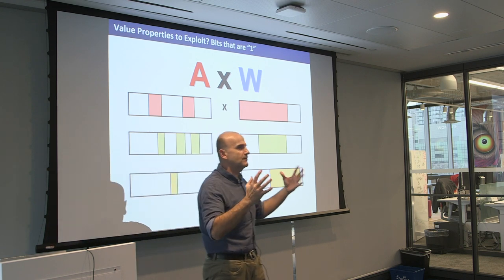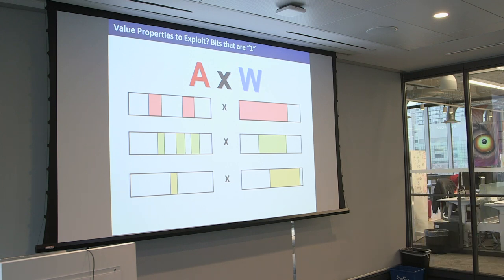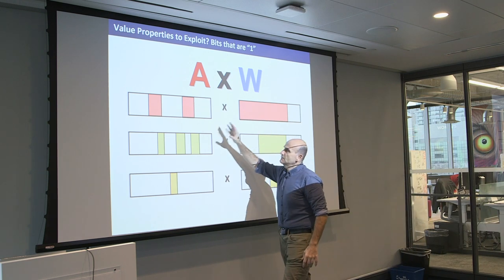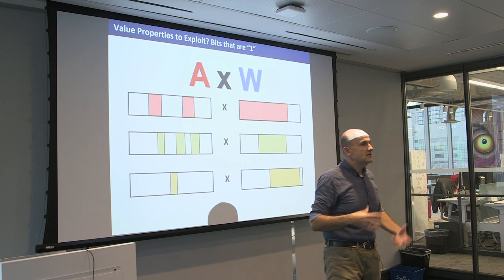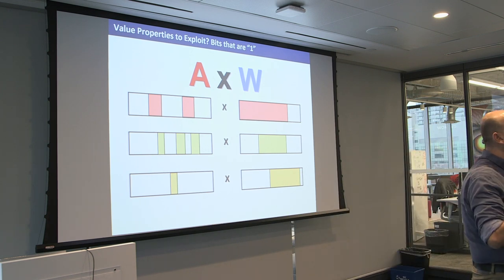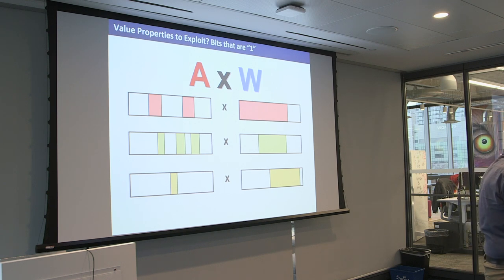The next idea: go back to primary school multiplication. You take one number, the other number, take one digit, multiply, write it down. These are binary numbers — the digit you get is going to be 0 or 1. So when I'm multiplying a weight with an activation, it's only the bits that are one that actually do something — add to the sum. And the interesting part is that if you look at the activations of typical networks, more than 90% of the bits are zeros. That means more than 90% of the work, if you break it down to fundamental multiplication, is useless — it's stuff I can throw out for you.